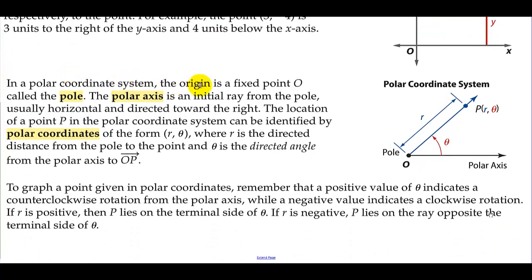In a polar coordinate system, the origin is a fixed point O called the pole. The polar axis is any initial ray from the pole, usually horizontal and directed toward the right. The location of a point P in the polar coordinate system can be identified by polar coordinates of the form (r,θ), where r is the directed distance from the pole to the point and θ is the directed angle from the polar axis to OP. So you have a radius and you have an angle that locates a unique point.